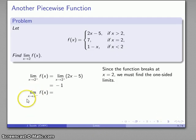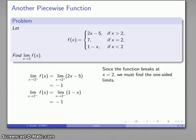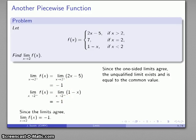Likewise, for the limit as x gets close to 2 staying a little bit below it: if x is less than 2, my function looks like 1 − x. So I find the limit as x approaches 2 from below of 1 − x, which heads towards 1 − 2 = −1. The limit from above and the limit from below both equal −1, so the unqualified limit is the common value, −1.